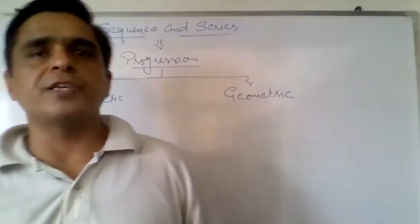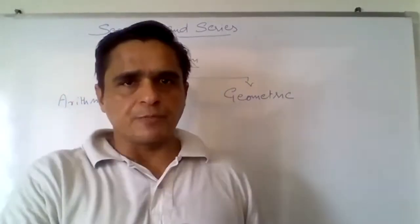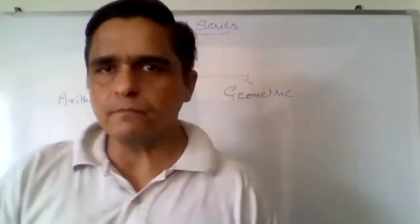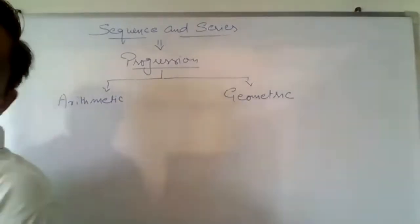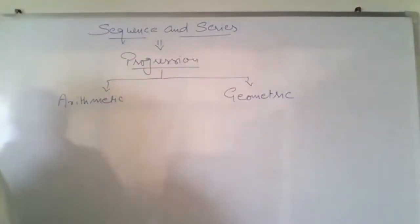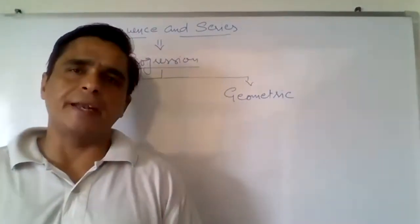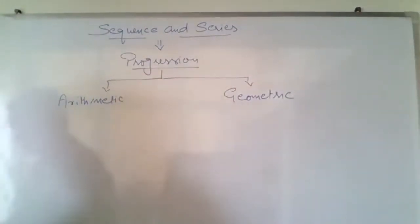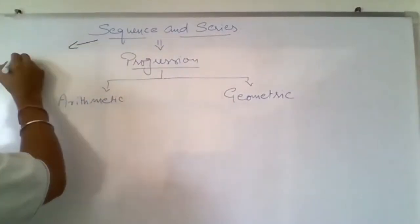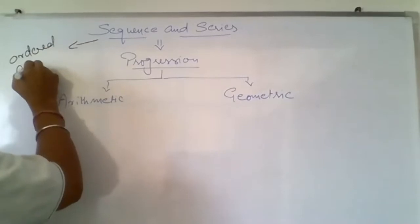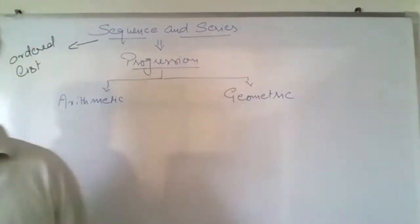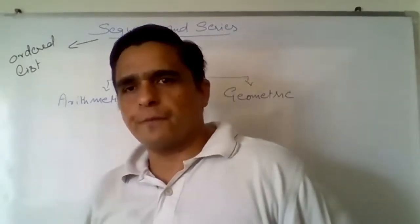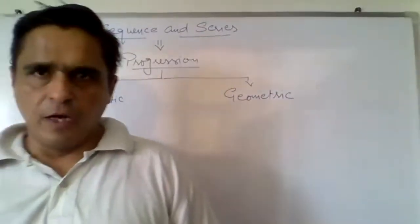Let us start with the definitions of different terms associated with this chapter. Please write down the first definition, which is of sequence. A sequence is an ordered list of numbers whose domain is the subset of natural numbers.